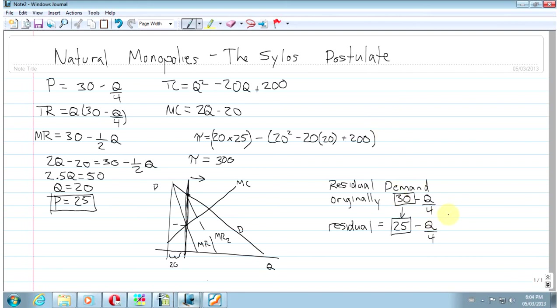So with our residual demand of 25 minus Q over 4, I'm going to take a new page and start with our new marginal cost and solve the problem and give some advice to my friend. So my demand P equals 25 minus Q over 4, MC equals Q minus 14.